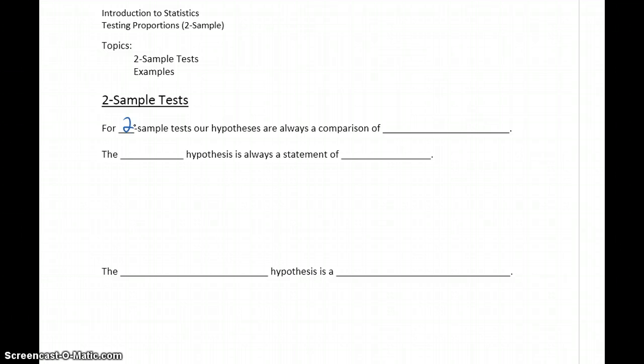For instance, any time we conduct a two sample test, our hypotheses will always be a comparison of two different population parameters. The null hypothesis is still always a statement of exact equality, meaning we could have a null hypothesis like p1 minus p2 is equal to zero, or something like mu1 minus mu2 is equal to zero.